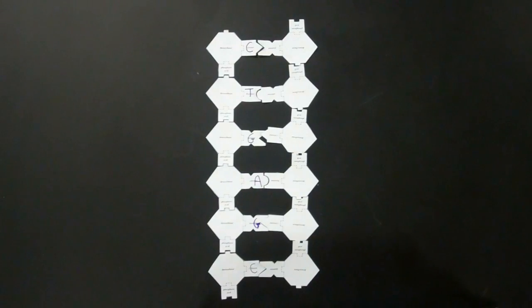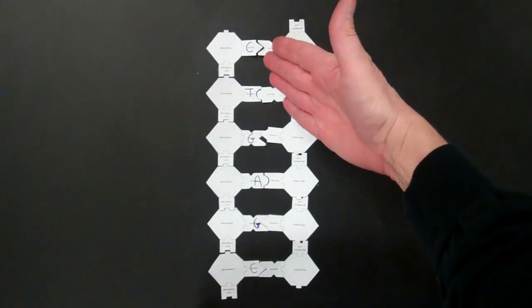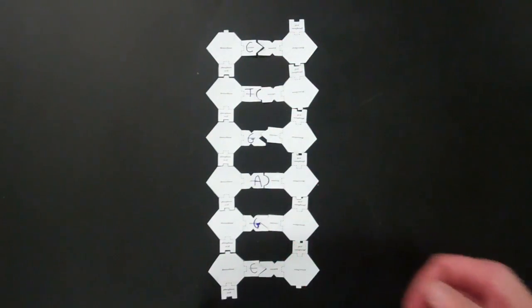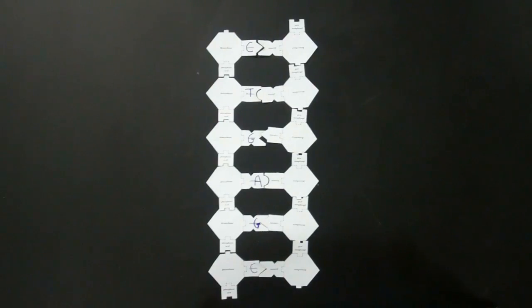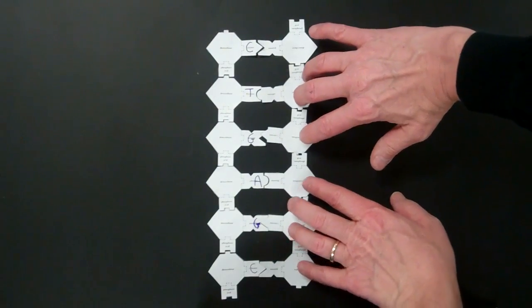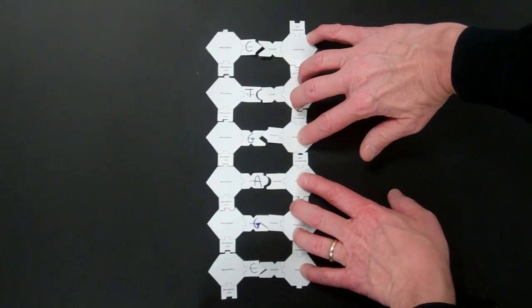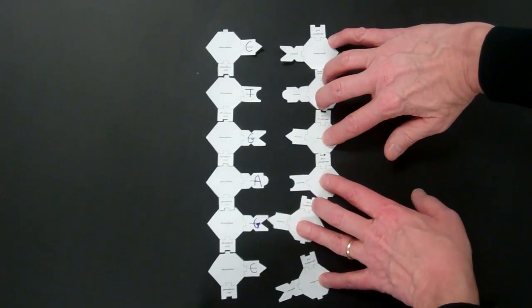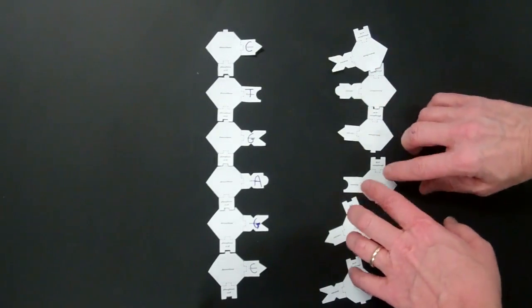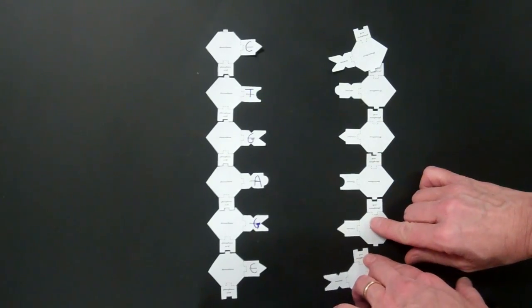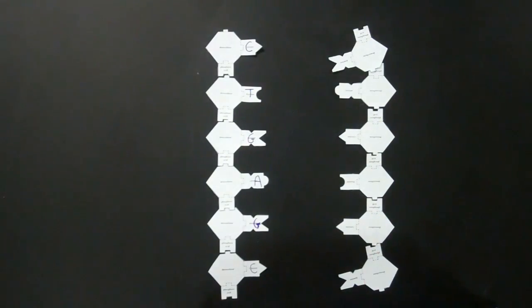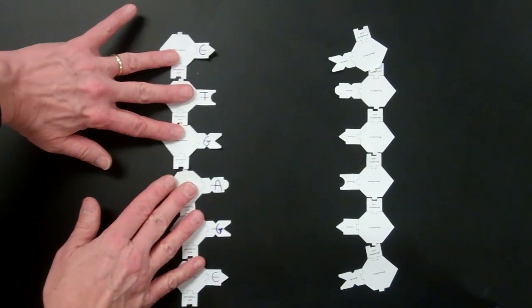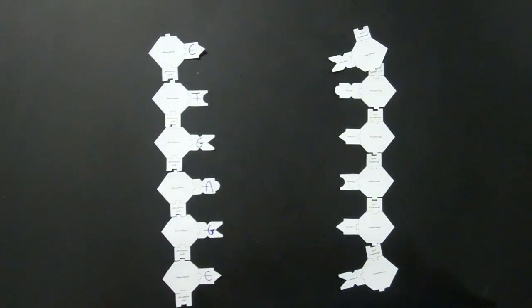To do that we need some enzymes to break the bonds between the nitrogen bases. Those hydrogen bonds are broken, and the molecule unzips. Now we have a left half right here and a right half.